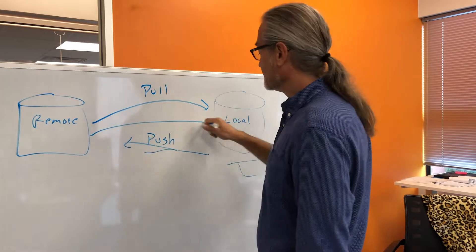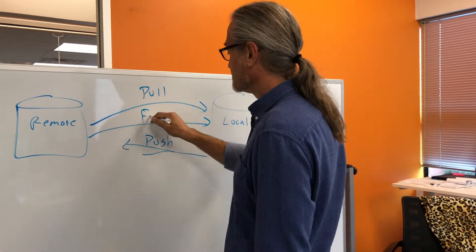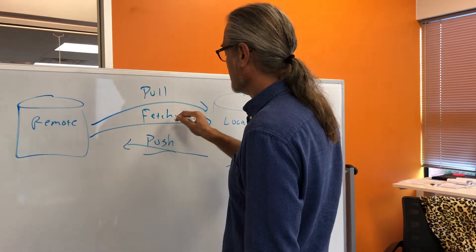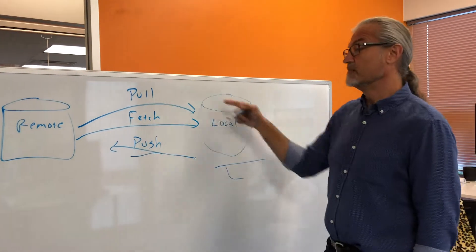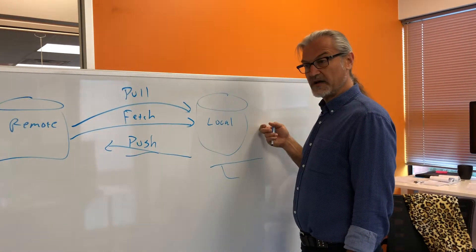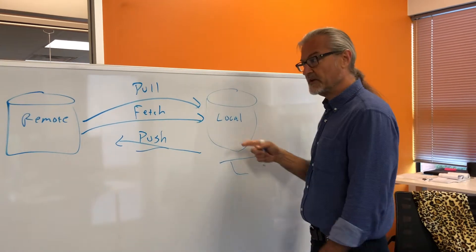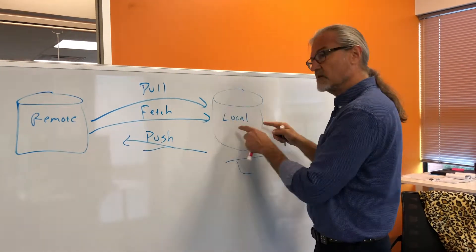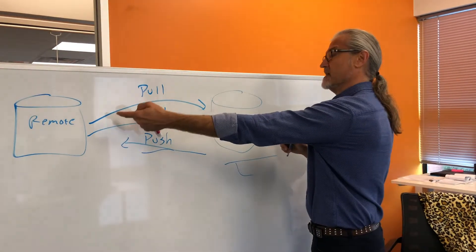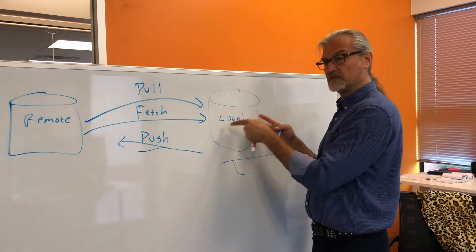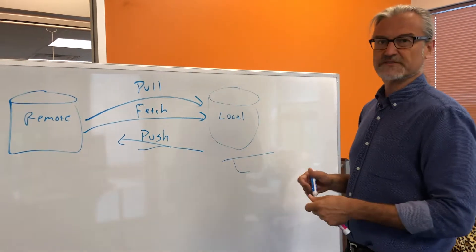There is a third pull-like operation called fetch. The difference between a pull and a fetch is that a pull will actually merge into your local working repository the changes that come from the server. A fetch will simply fetch the latest branches and information from the remote to the local without affecting your working repository.